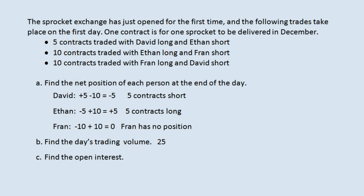The open interest can be more tricky unless you look at the technical definition, which makes it kind of simple. The open interest is how many contracts now exist in the world — and it's not twenty-five, because when people take opposite positions they net out. The technical definition is that it's the total number of contracts long, or equivalently the total number of contracts short. So the open interest here is five, because there are five contracts long and five contracts short. At the end of the day there are only five contracts: Ethan is long those contracts and David is short those contracts. This is also a good way to check your work — when you're done netting out all the positions, you need to have an equal number on the long side as on the short side.